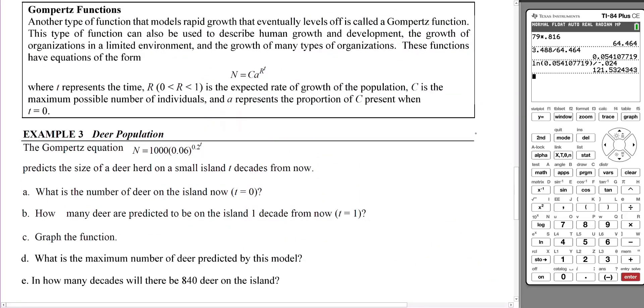Gompertz Functions: Another type of function that models rapid growth that eventually levels off is called the Gompertz function. This type of function can also be used to describe human growth and development, the growth of organizations in a limited environment, and many other types of organizations. These functions have the equation of the form N = CA^(R^T), so we have a double exponentiation going on.